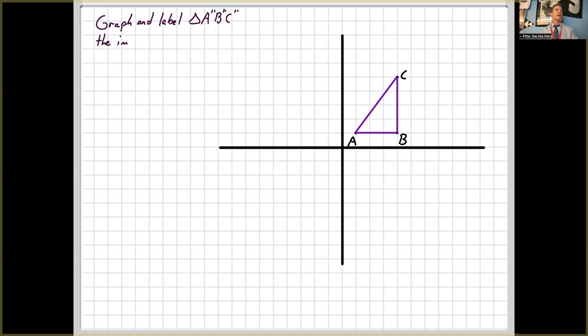Graph and label triangle A double prime, B double prime, C double prime, the image of triangle ABC after reflection over the line X equals negative one, followed by reflection over the line Y equals zero.